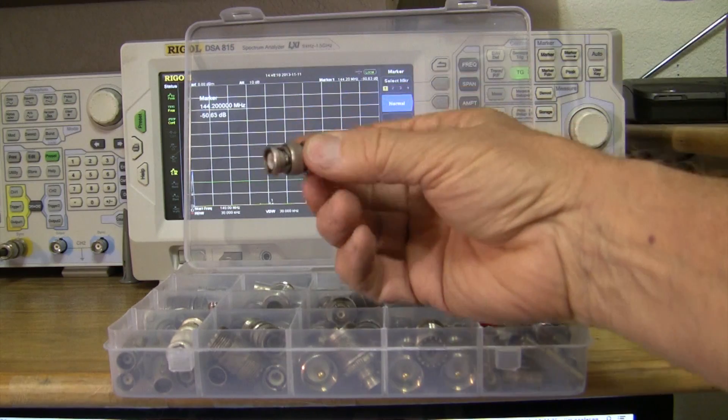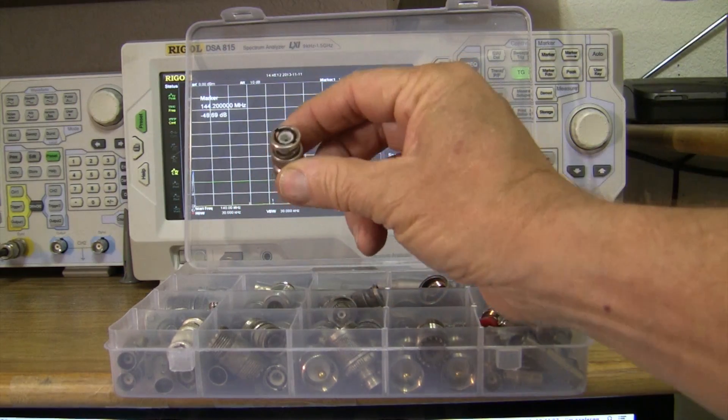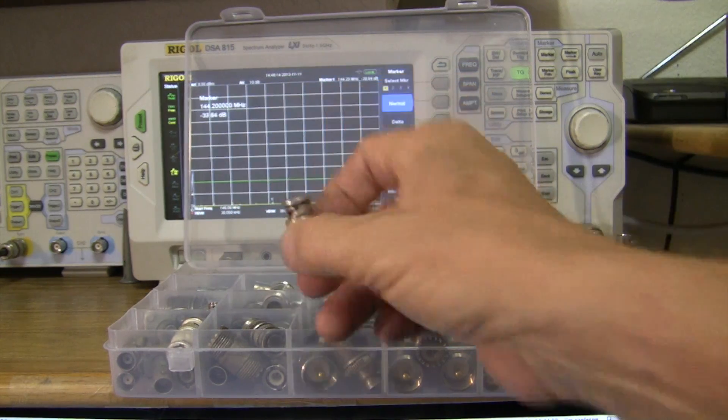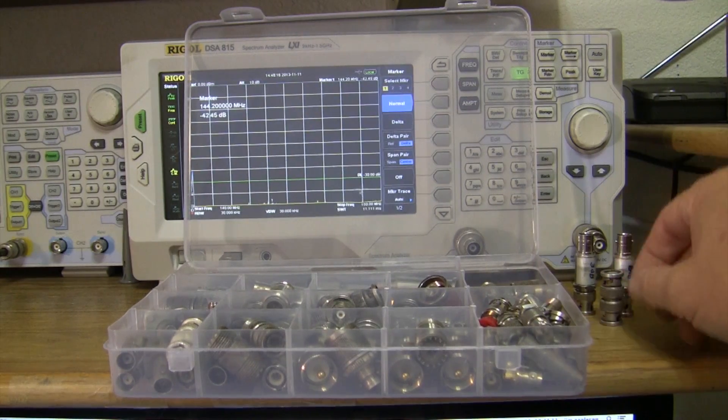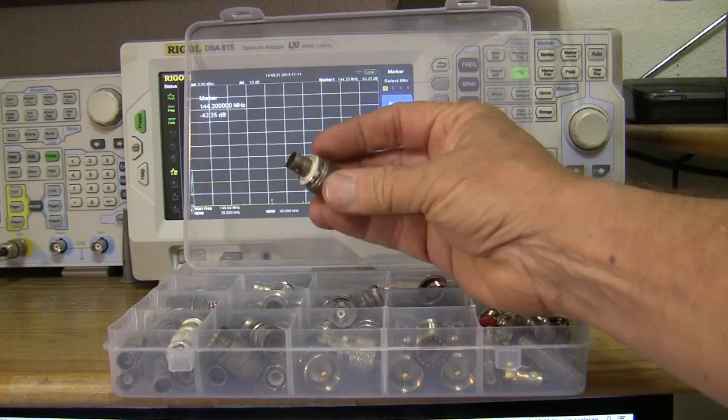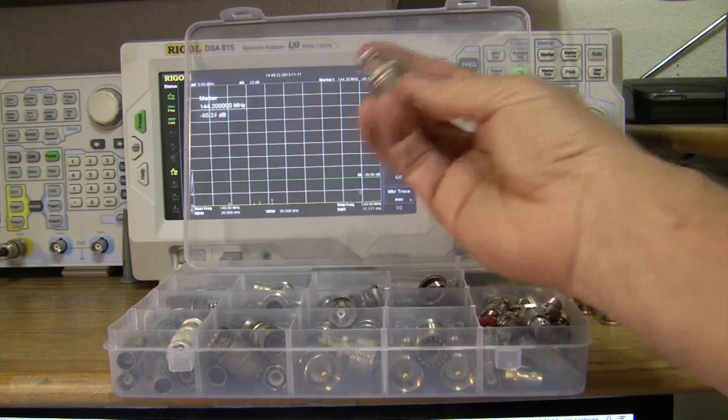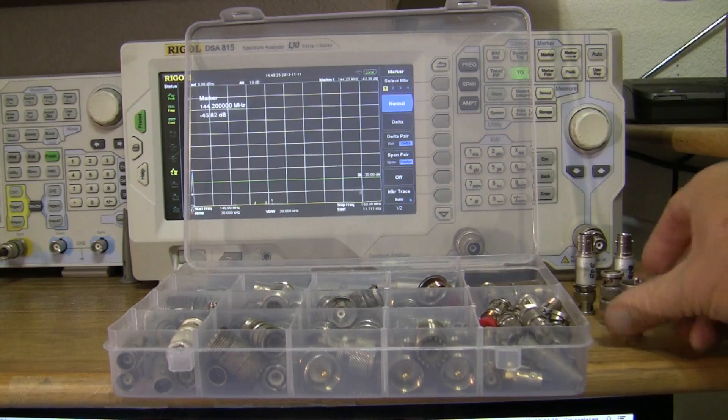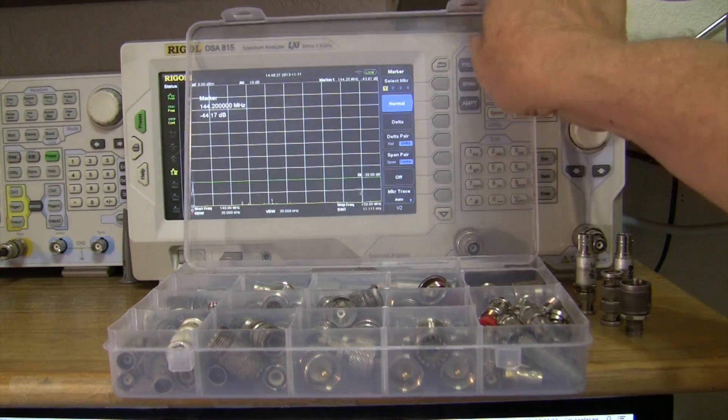I will need this male-to-male BNC adapter. Let's see why in a second. I will need this UHF to BNC adapter to put on the antenna. So that's the adapters that I'll need. Close that box up.